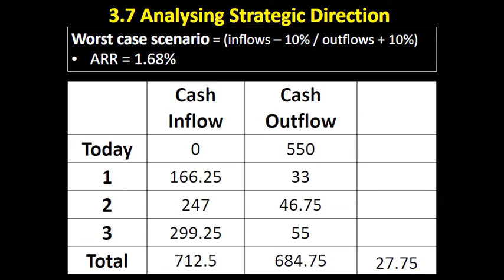In the worst case scenario, however, let's say that their cash inflows are inaccurate — they've overestimated them by 10% — and they've underestimated their outflows by 10%. In this case, the project is far less profitable overall, and when we put it through the average rate of return calculation, we're only coming in with a figure of 1.68%. So that would be very concerning for management.